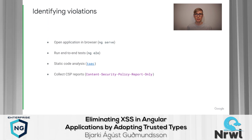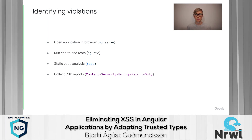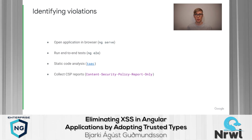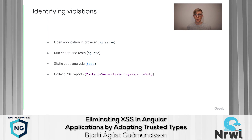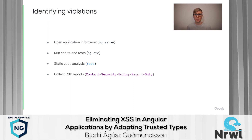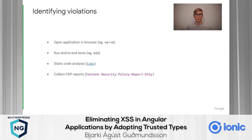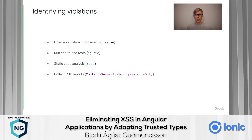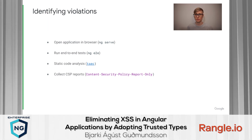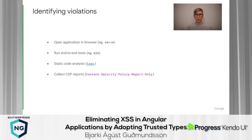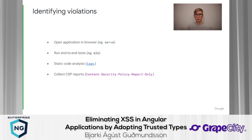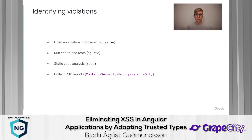There are a few different ways to identify trusted types violations. The simplest way is to run ng serve and open the application in a browser — trusted types violations will surface as exceptions in the developer console and contain a stack trace. Enabling trusted types in Angular.json will also cause them to be enforced in end-to-end tests, so running ng e2e is a good source of violations if the tests are comprehensive. It is also possible to use static code analysis; we've developed a tool called TSEC that looks for trusted types violations in TypeScript code. Finally, you can use a feature of CSP known as Report Only mode, which allows you to collect and analyze CSP reports containing trusted types violations from actual users without causing production breakage. This is a good practice before deploying any CSP feature.